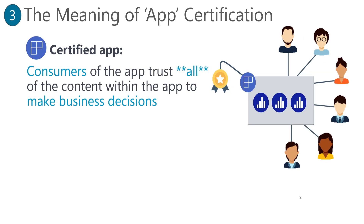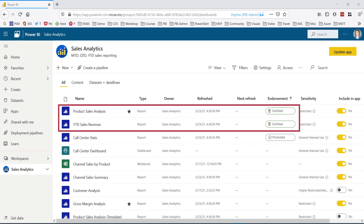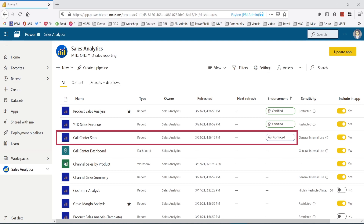Now, of course, this gets tricky because you'll have to decide if your internal process for a certified report will also require the underlying dataset to be certified. I would say yes if build permissions are allowed on that underlying dataset. And this brings us to a certified app. Think of the Power BI app as a collection of reports packaged up for delivery to your consumers. Certifying an entire app in the Power BI service is a one-click convenience, but it doesn't change the individual item endorsements within the workspace itself. Here I'm in my sales analytics workspace, which has a variety of different reports, dashboards, and workbooks.